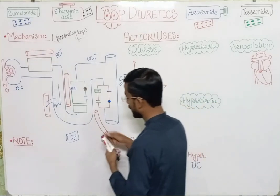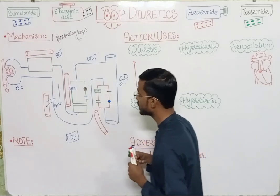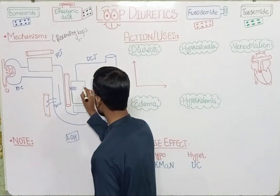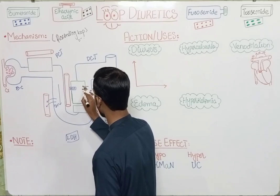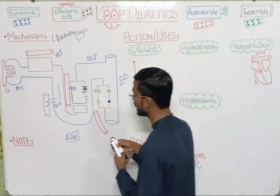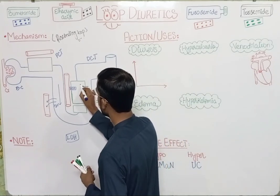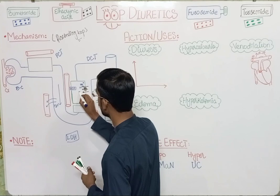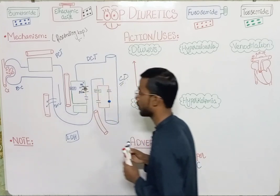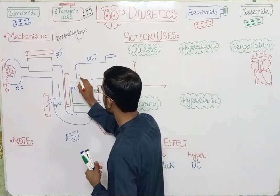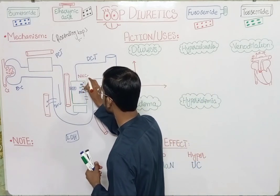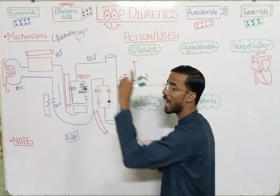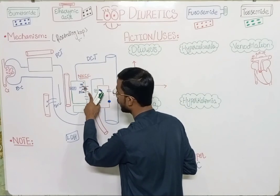Here you see the tubular cell. In this situation, you will see the absorption of four ions: one sodium, one potassium, and two chlorides are absorbed from the ascending loop into the cell. That is why we call it the NKCC co-transporter — one sodium, one potassium, and two chlorides.